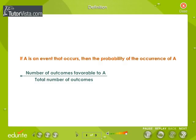If A is an event that occurs, then the probability of the occurrence of A is equal to number of outcomes favorable to A by total number of possible outcomes.